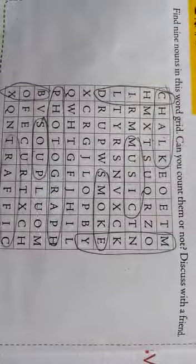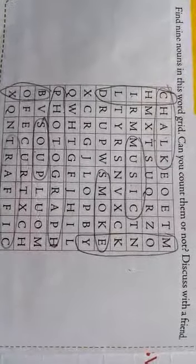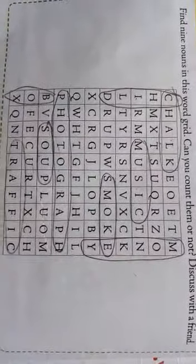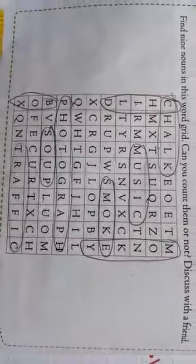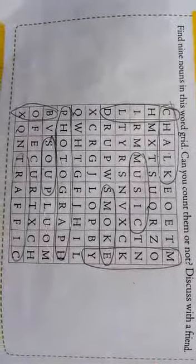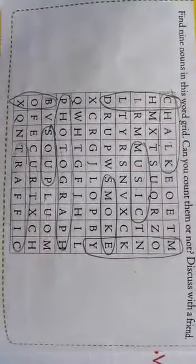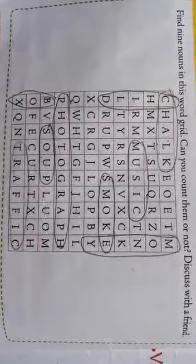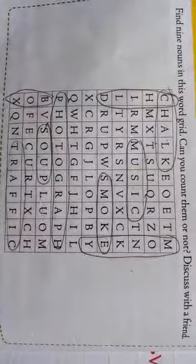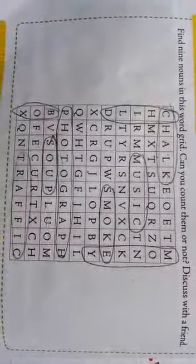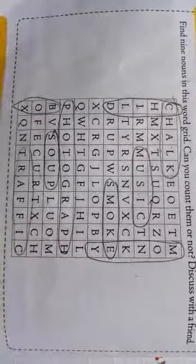If you see, child, C-H-I-L-D, child. And the same line, if you see at the bottom, that is box, B-O-X, box. One more word is monkey, M-O-N-K-Y, monkey. Hope that everyone understood today's class. We shall meet in the next class. Thank you.